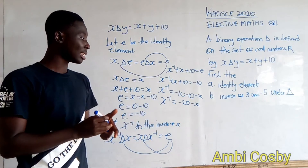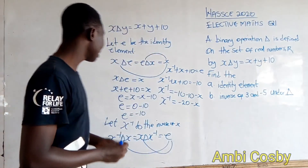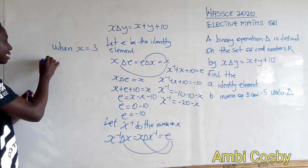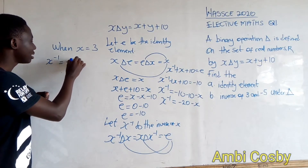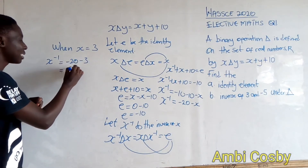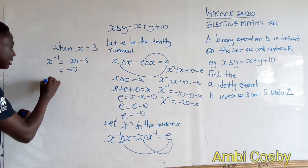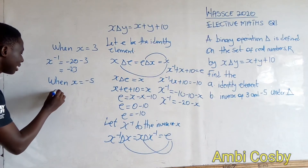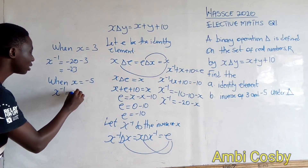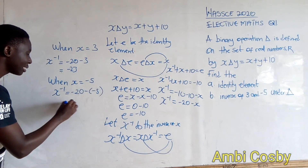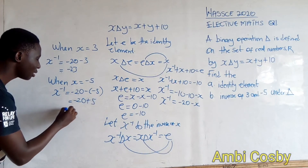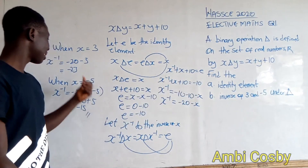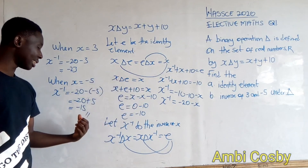Now we find the inverse of 3 and -5. When x = 3, the inverse is -20 - 3 = -23. When x = -5, the inverse is -20 - (-5) = -20 + 5 = -15. So the inverse of 3 under the operation is -23, and the inverse of -5 under the operation is -15.